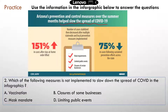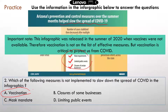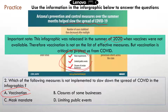Question two: which of the following measures is NOT implemented to slow down the spread of COVID in the infographic? There are three things mentioned in the infographic, so vaccination is not mentioned. This infographic was released in the summer of 2020, when vaccines were not yet available. The only effective measures at the time were mask requirements, limited public gatherings, and closures of businesses. That's why vaccines were not listed — but information changes, and vaccination is now a very effective measure to control COVID.